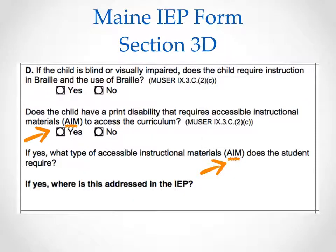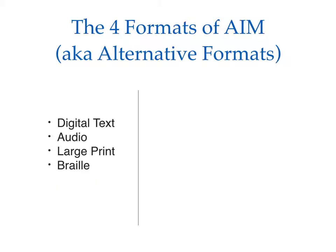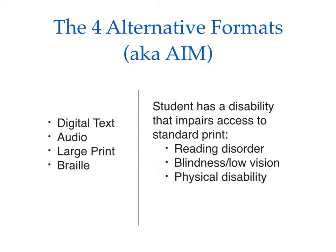AIM is a provision of IDEA and thus appears in Section 3D of Maine's IEP form. Teams are required to consider a student's need for AIM as part of their special education program. AIM consists of four specialized formats, known as alternative formats by post-secondary disability support providers: digital text, audio, large print, and braille. Regardless of a student's age, qualifying for AIM requires a need related to a reading disorder, blindness or low vision, or a physical condition that impairs the ability to use standard print materials, such as holding a book or turning its pages.